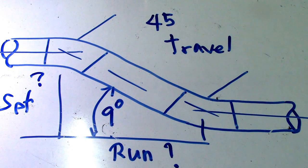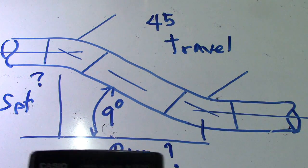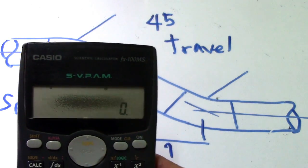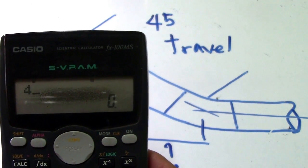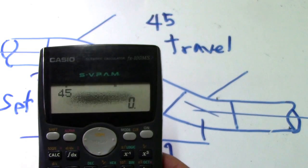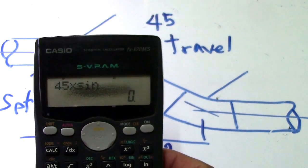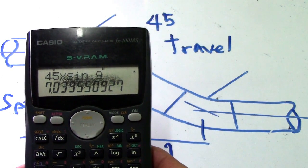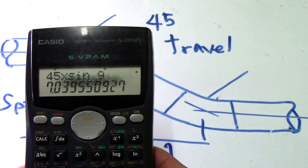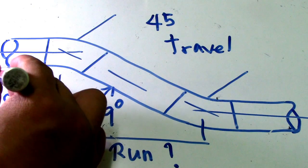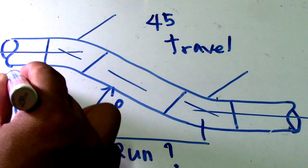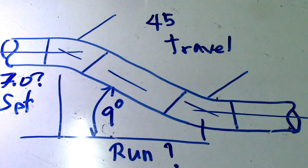To find set, the formula is: set equals travel multiplied by sine. Using my calculator, I'll show you how. Travel is 45, so multiply it by sine 9 degrees. This is the answer for the set — set equals 7.0.